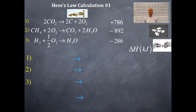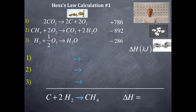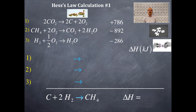Keeping your ducks in a row is critical. This is what we want — this is what was given in the problem initially: solving for the delta H of this reaction. You can start anywhere you want on the puzzle. I'm going to start with the hydrogen — I see it on the reactant side and it has a stoichiometric coefficient of 2.